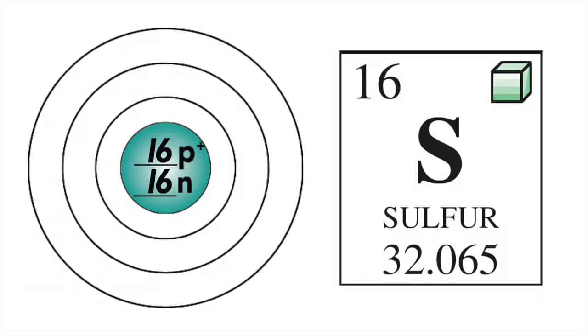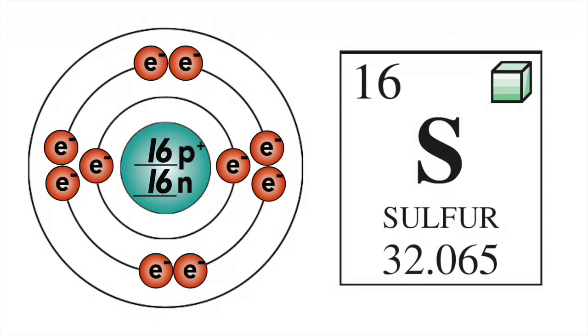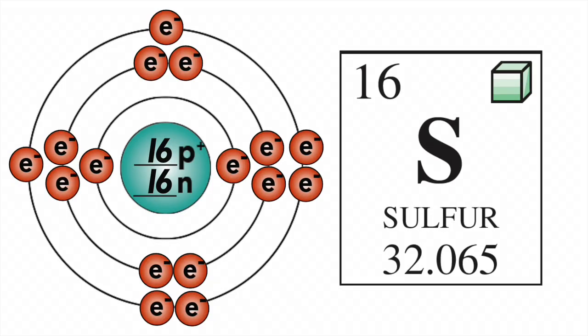You'll organize sulfur's 16 electrons like this. Two in the first orbital, eight in the second. That leaves six, which will go into the third orbital. Again, which ones you pair up is totally up to you.